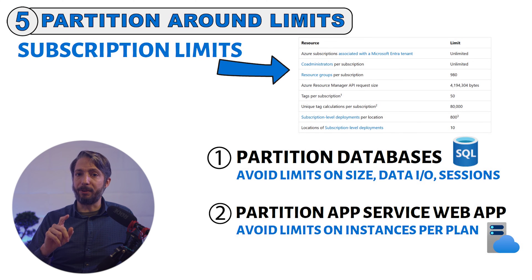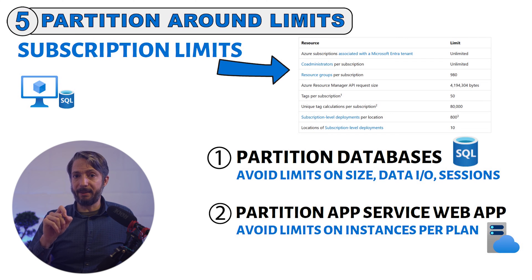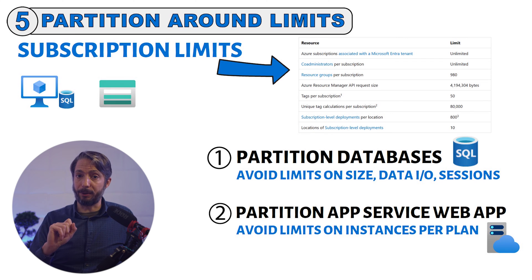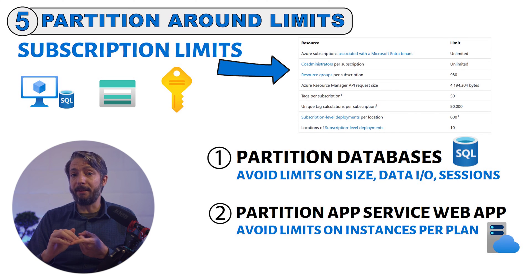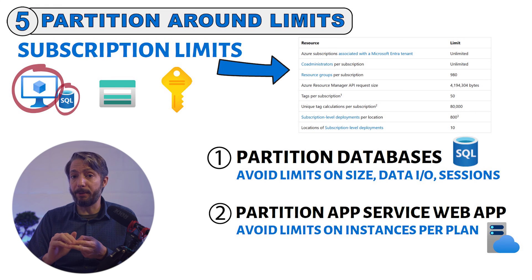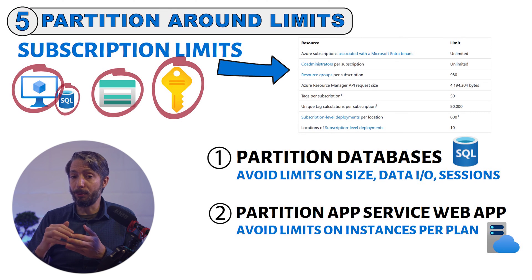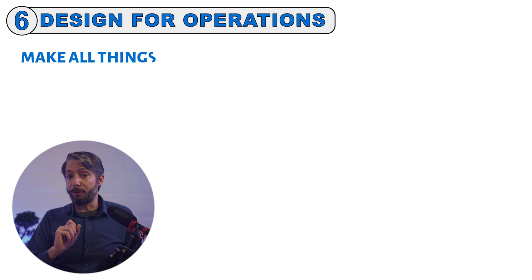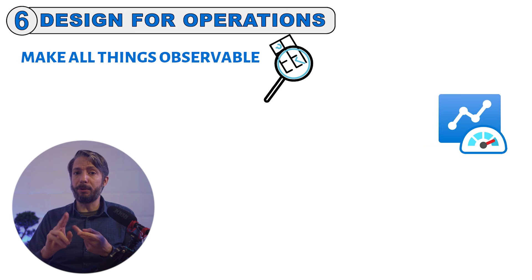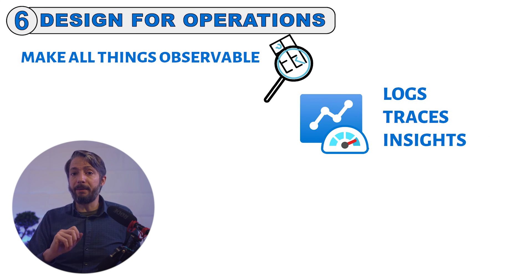Consider having a database server deployed on a VM — the VM has a VHD disk backed by Azure storage, and the storage account belongs to an Azure subscription. Notice that each step in this hierarchy has limits: the database server may have a connection pool limit, VMs have CPU and network limits, storage has IOPS limits, and the subscription has limits on the number of virtual machine cores that can be spun up. This is where we make things observable — once a solution is deployed, there are logs, traces, and insights available, and instruments for monitoring and metrics to proactively identify issues.